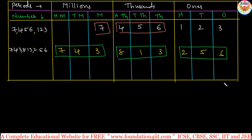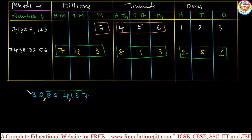Instead of making a table, if a number is given directly, we apply the same process. Let us take another example: 8,254,137 — any number. From the right side, mark three digits at a time. The first three digits are in ones, the next three are in thousands, and the remaining two digits go into the millions period. So those two digits — 82 — are in millions.